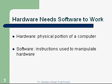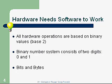Hardware is the physical portion of the computer — the things we can see and touch. Software is instructions, and those instructions are used to manipulate the hardware. All hardware operations are based on binary values. A binary system is what we call a base-two system — it only has a zero and a one, two characters, in which to express all the information it does.